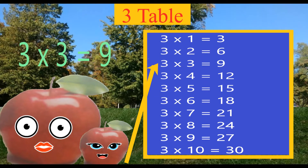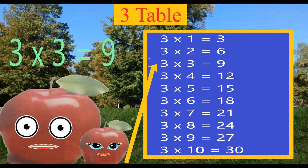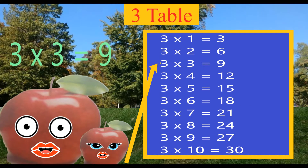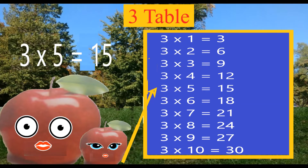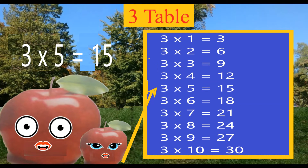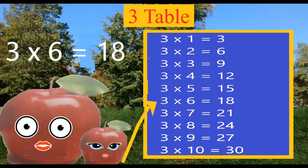Three threes are nine. Three fours are twelve. Three fives are fifteen. Three sixes are eighteen.